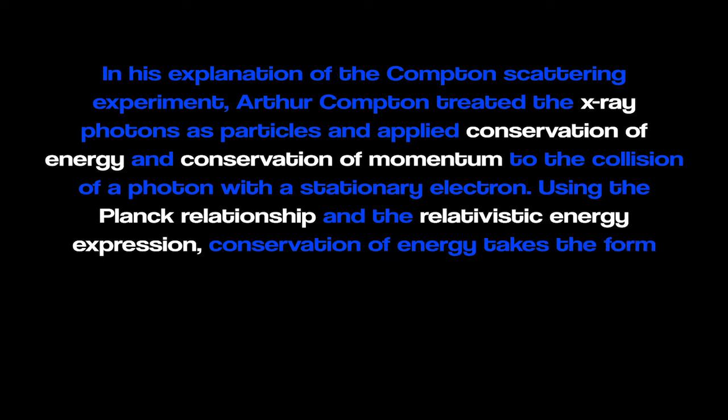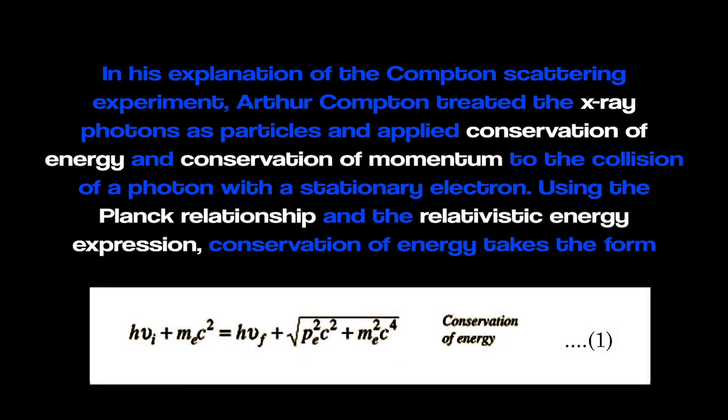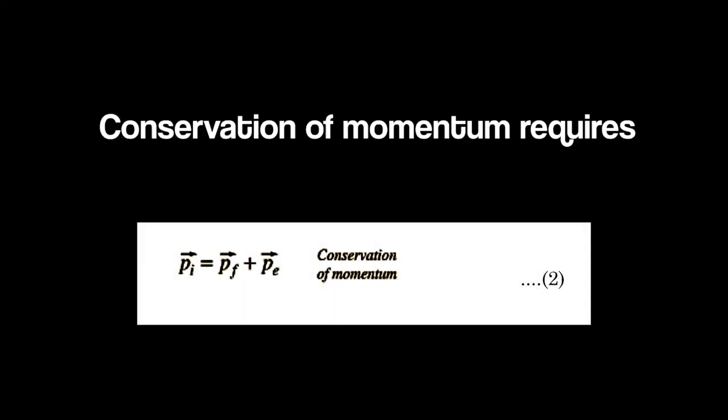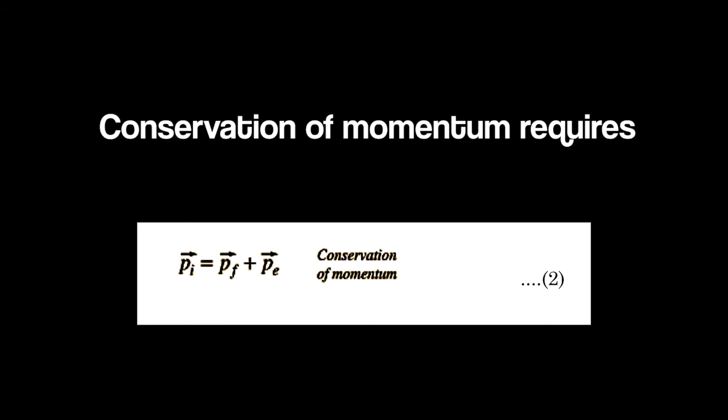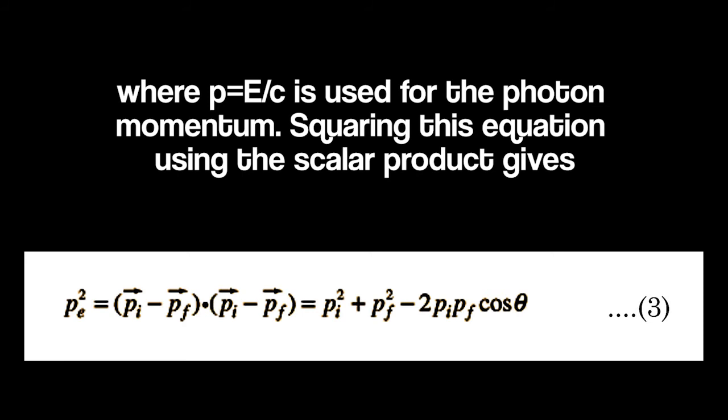Conservation of energy takes the form h nu i plus m e c square equal to h nu f plus root over p e square c square plus m e square c to the power 4 which is equation number 1. Conservation of momentum requires p i equal to p f plus p e which is equation number 2. Where p is used for the photon momentum squaring this equation number 2 using the scalar product gives equation number 3.